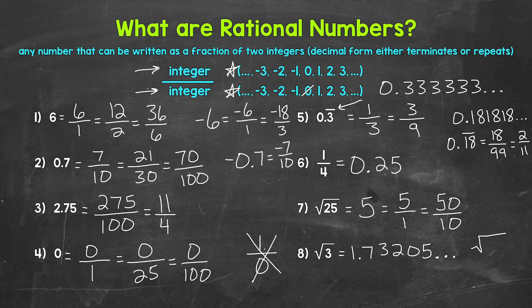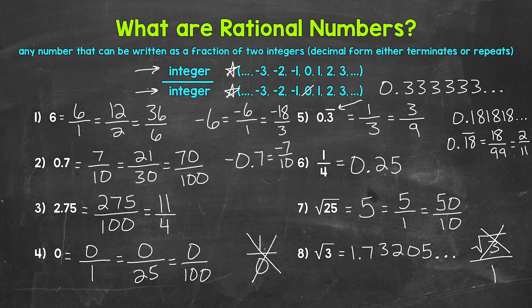You may be thinking: can't we just write this as the square root of 3 over 1? That's a fraction. Yes, it is a fraction — but remember, a rational number is any number that can be written as a fraction of two integers, and this numerator is not an integer. The square root of 3 is what we call irrational. Any time we take the square root of something that is not a perfect square, or a cube root of something that is not a perfect cube, we get an irrational number.